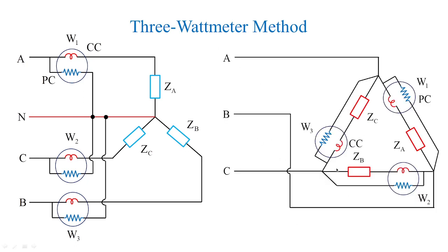For a delta type of load, this is how the arrangement would be. You can see the loads ZA, ZB, ZC are connected in delta fashion, whereas the current coils are connected in series with the load and the pressure coils are connected in parallel with the load. You have wattmeter 1, 2, and 3 respectively for phase A, B, and C. This three wattmeter method is employed for star connected and delta connected loads both for balanced and unbalanced conditions.